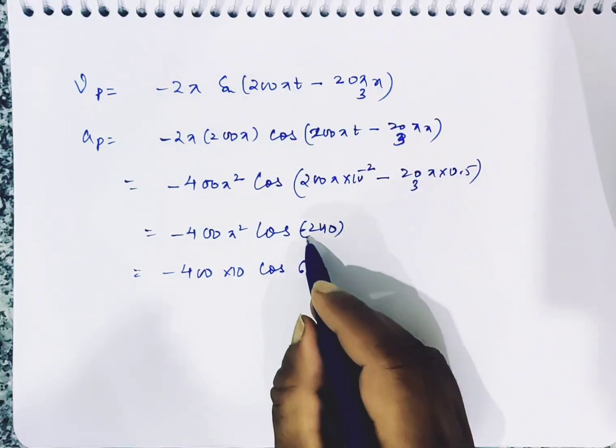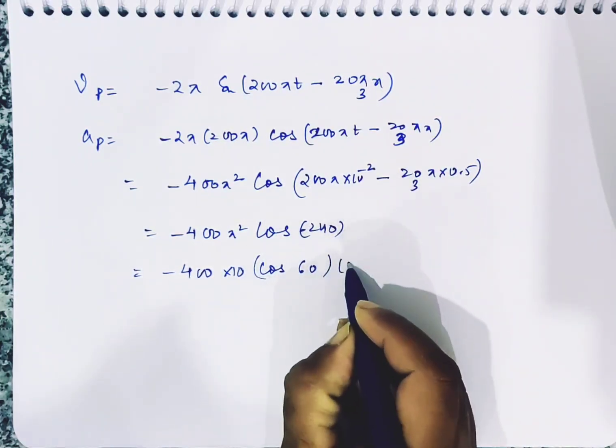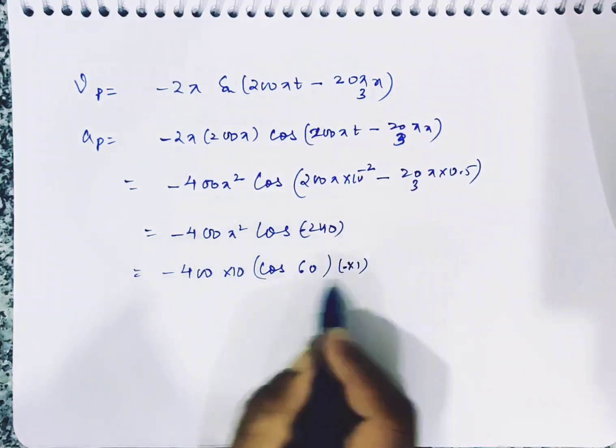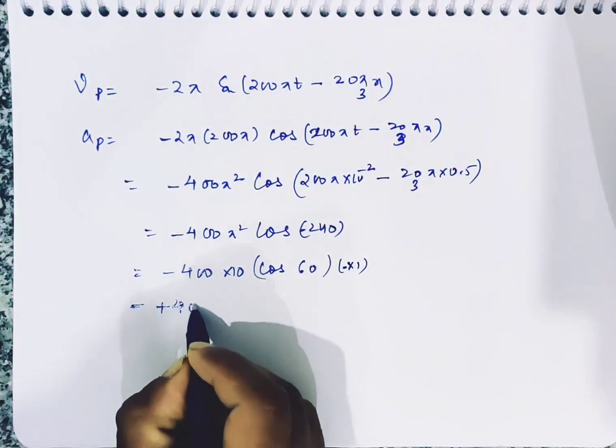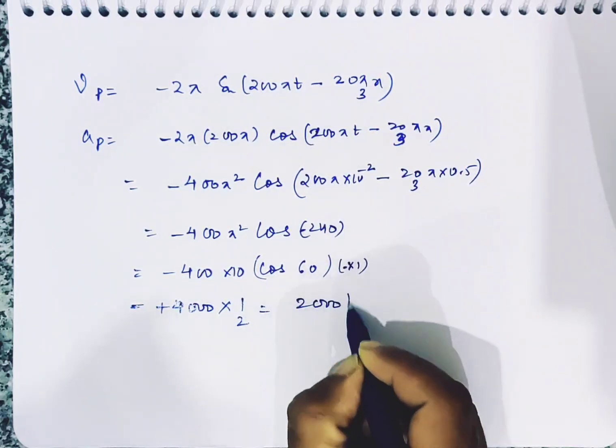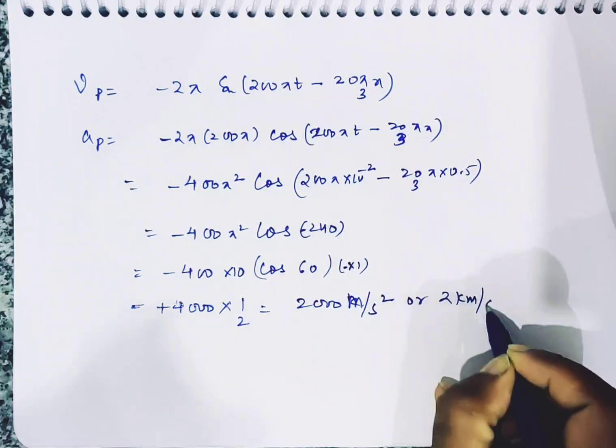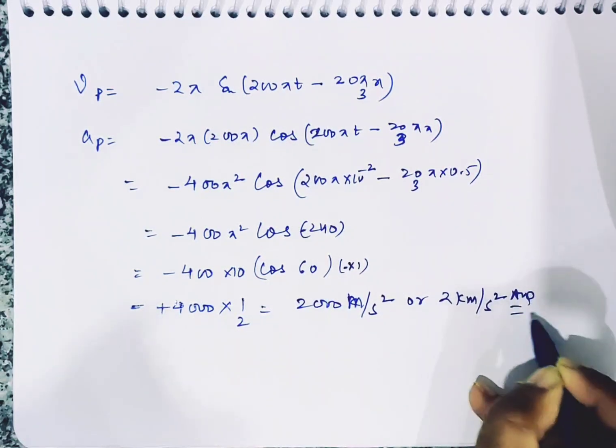So we get plus 4000 into one by two, that is 2000 meter per second square or 2 kilometer per second square as the acceleration of the particle.